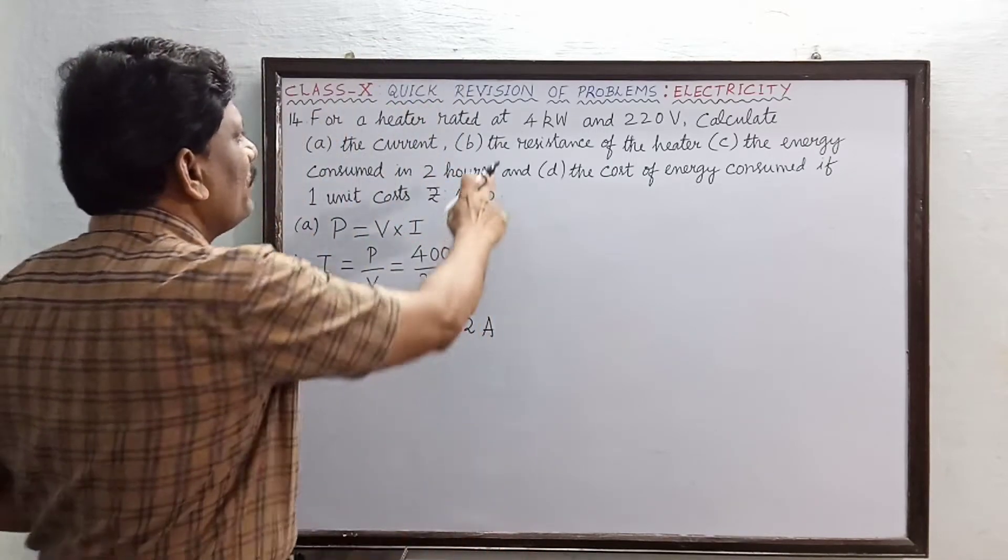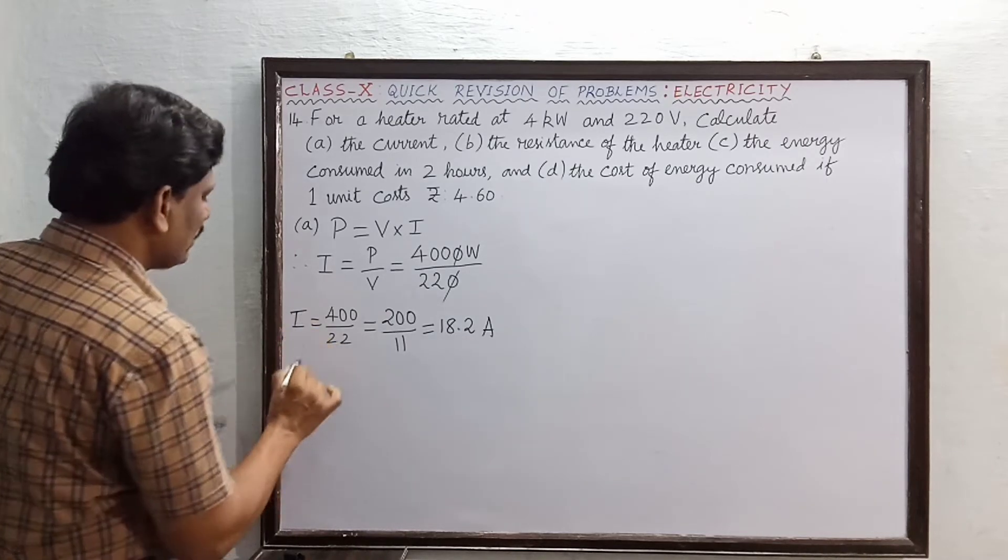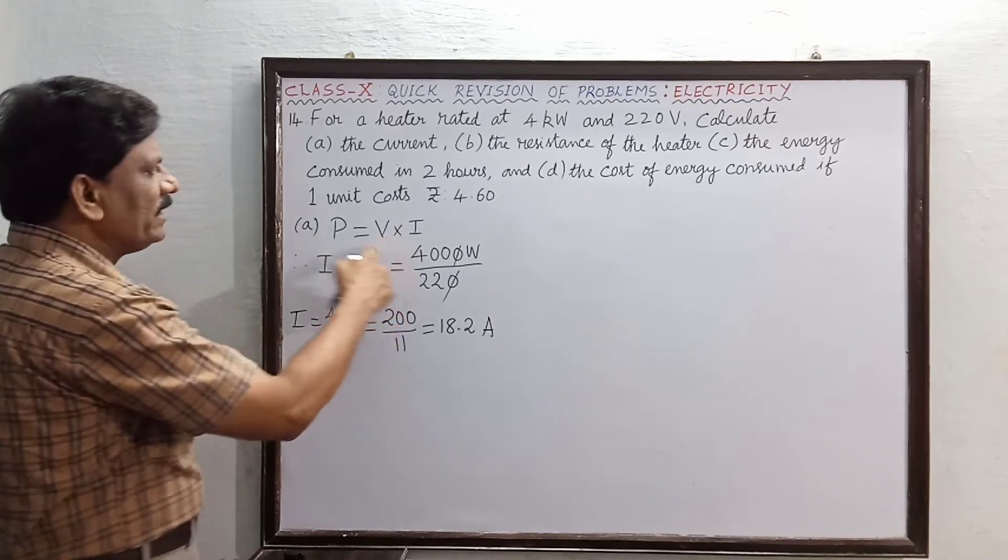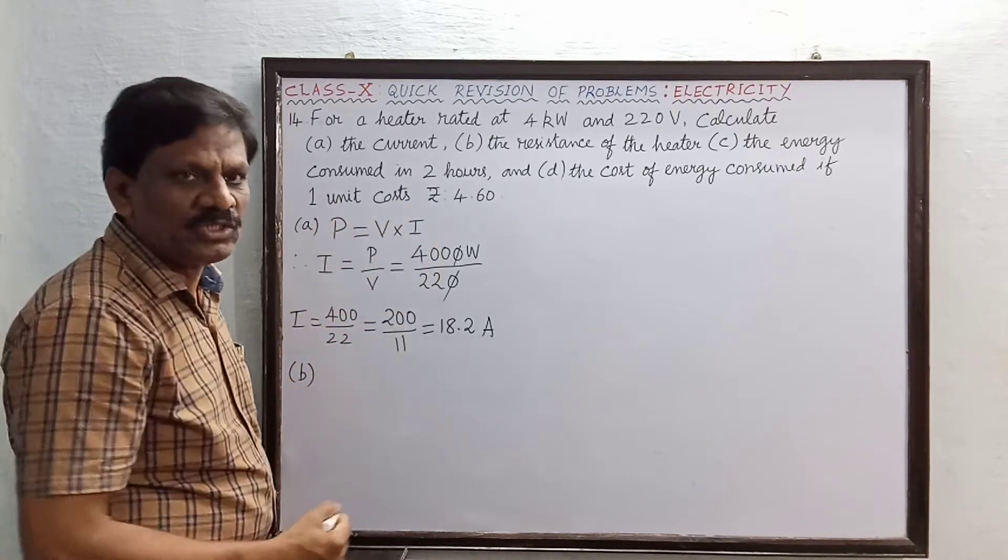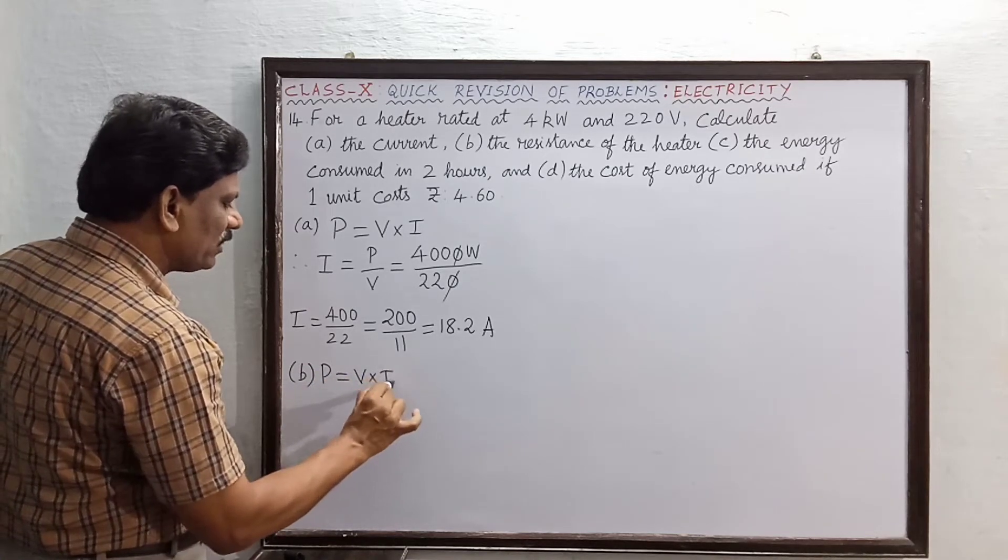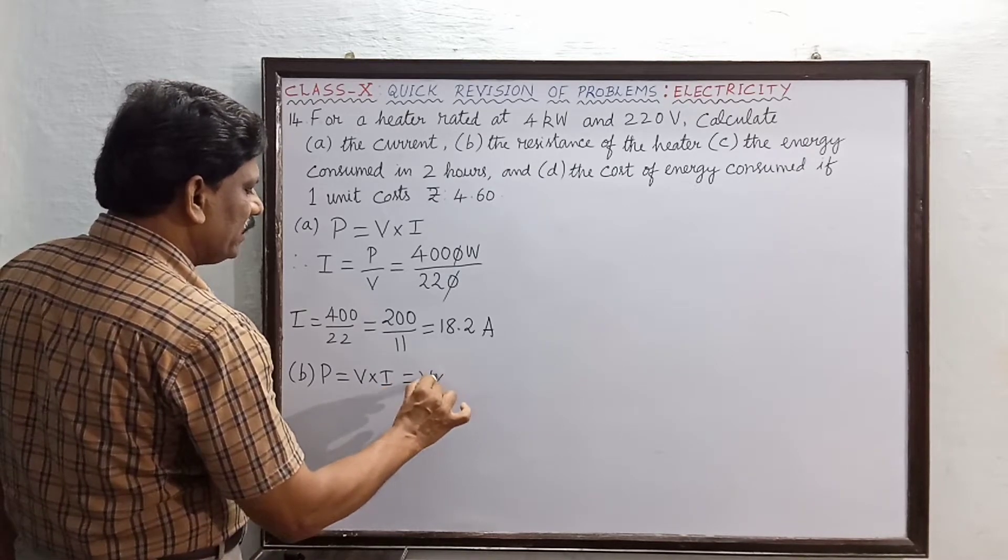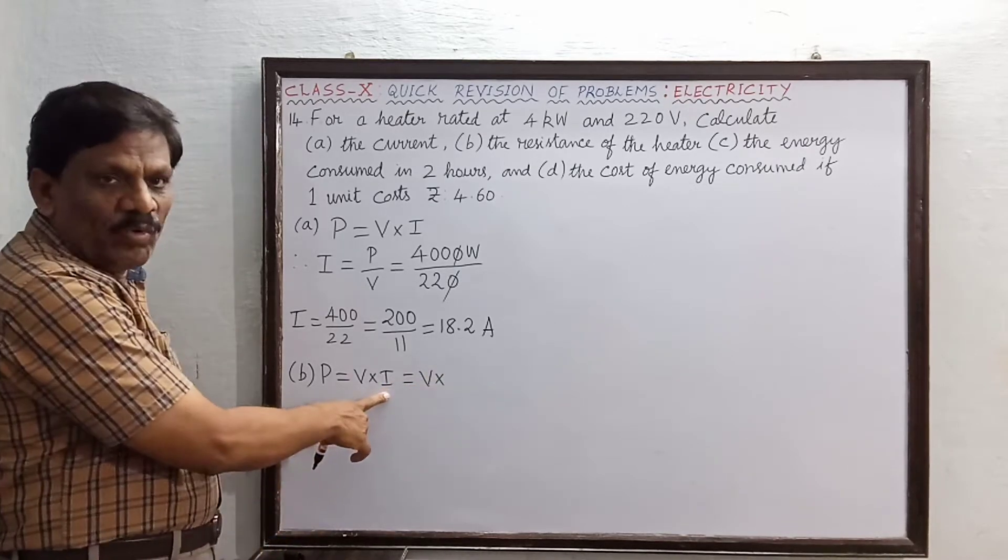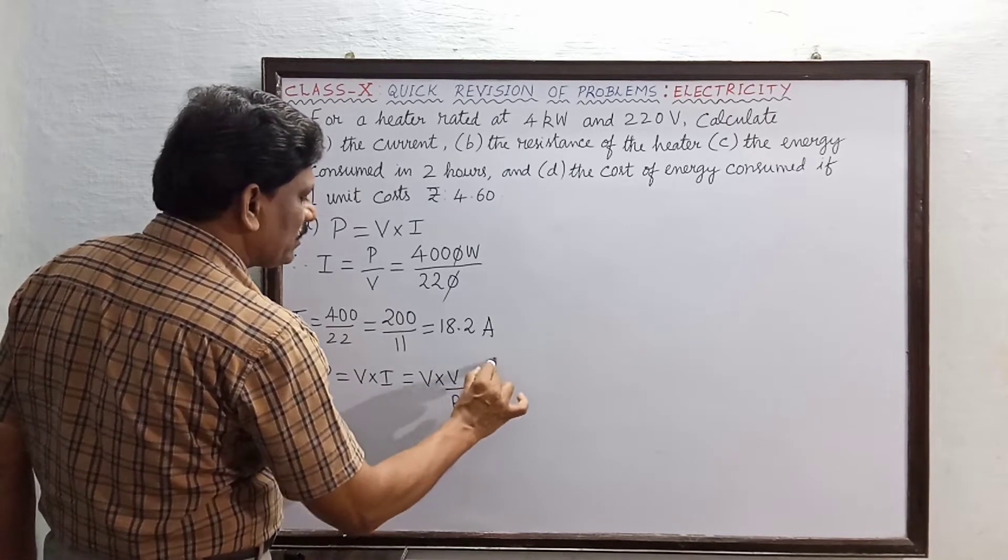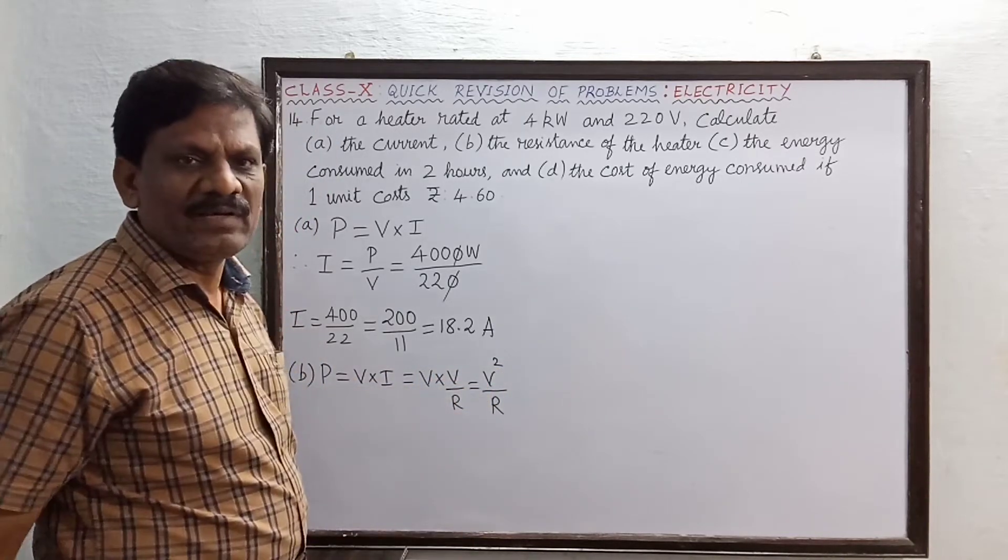What is the second subdivision? The resistance of the heater is asked. So subdivision B. Once again, I start from this equation power is equal to voltage into current. Power is equal to voltage into current, and this is also now equal to voltage into V by R from Ohm's law. This is now equal to V square by R. Power is also equal to V square by R.